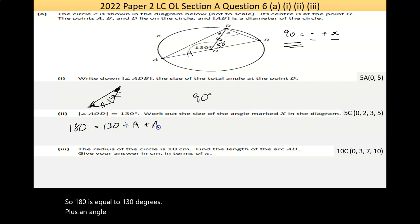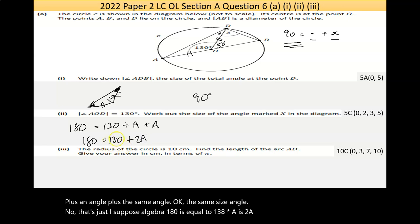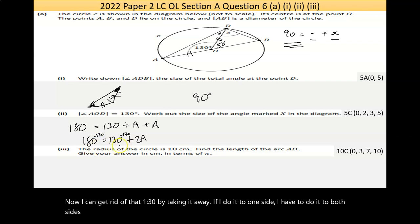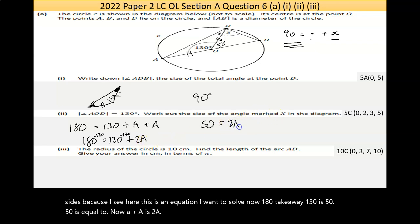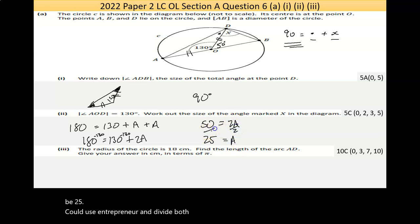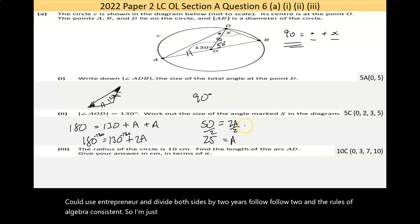Now if I know that's 130, then 180 equals 130 plus angle A plus angle A. That's algebra: 180 = 130 + 2A. I can subtract 130 from both sides, so 50 = 2A. The number is going to be 25.